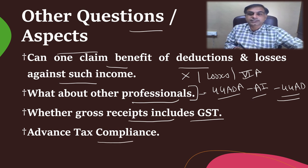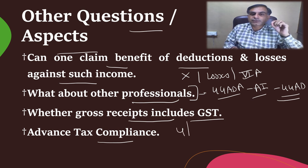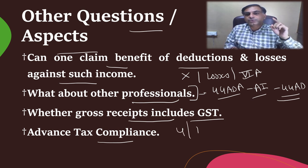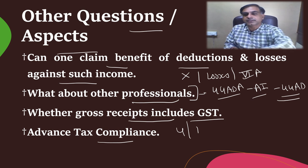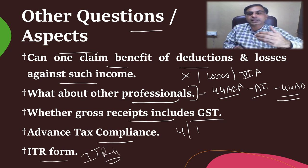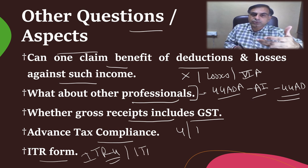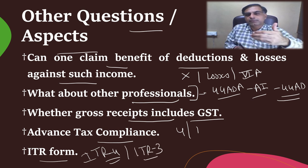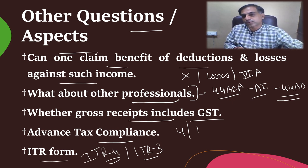Advance tax compliance is an interesting point. If you are covered under 44 ADA, you are not required to pay advance tax in four installments — merely one installment, that is the 15th of March compliance, would be sufficient. Regarding ITR form, the applicable form for a specified professional is ITR 4. And if you have any other income like capital gains or salary income apart from 44 ADA income, you can file ITR 3, within which you can still claim the benefit of 44 ADA.